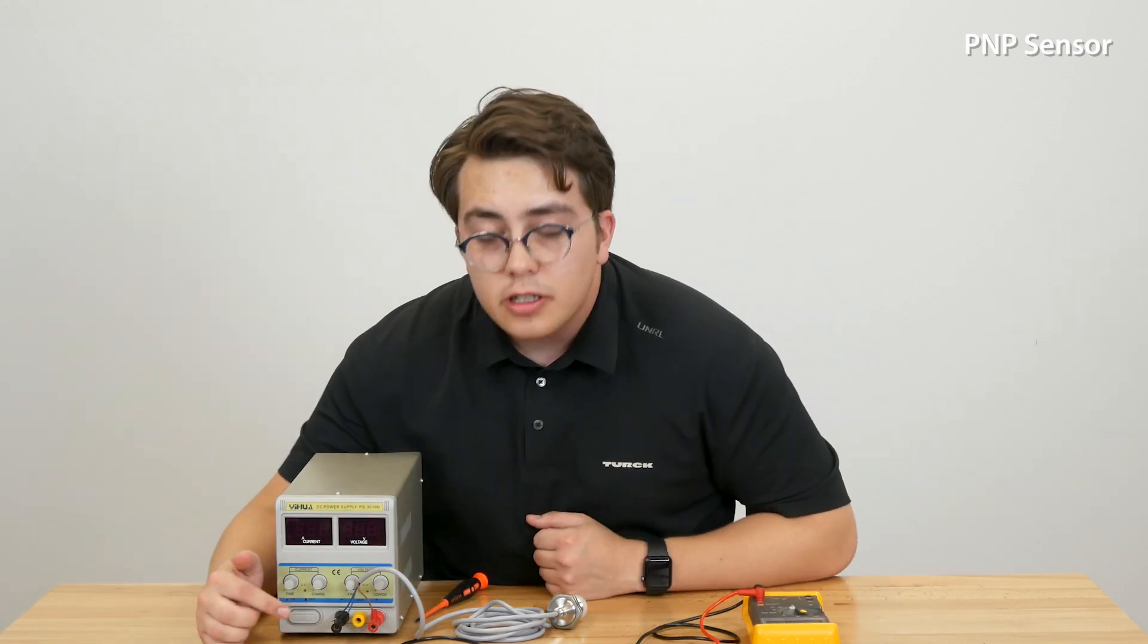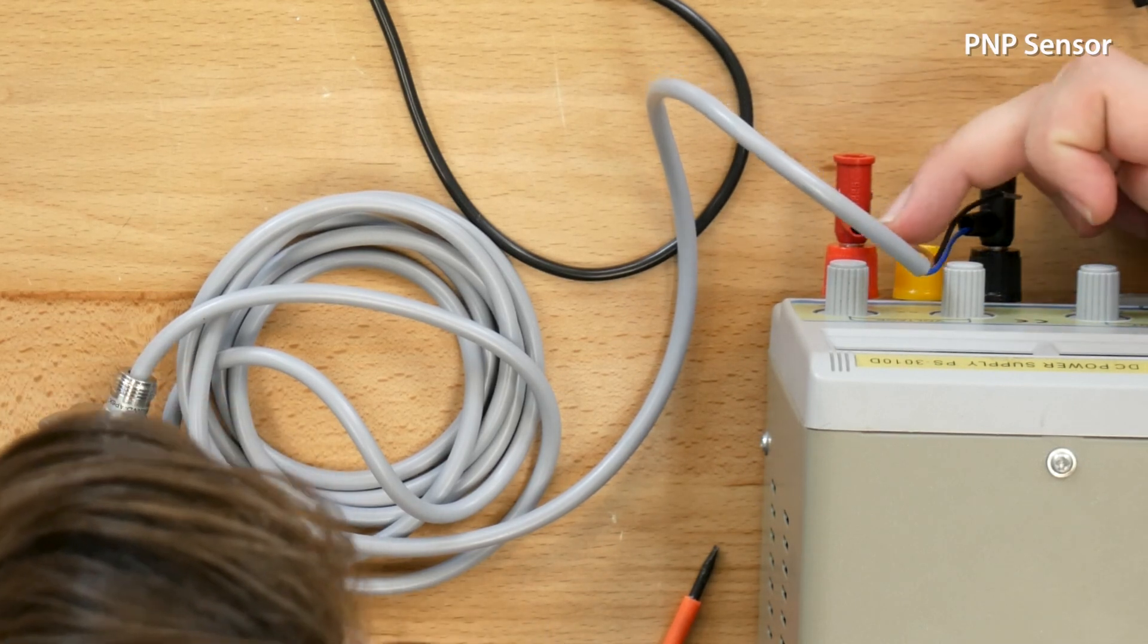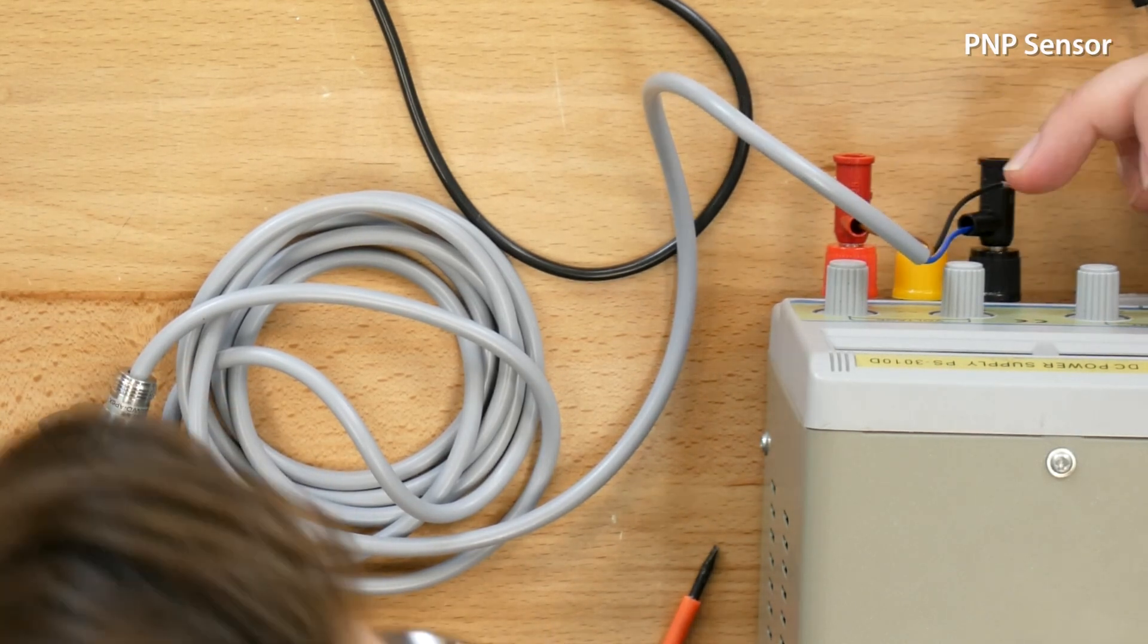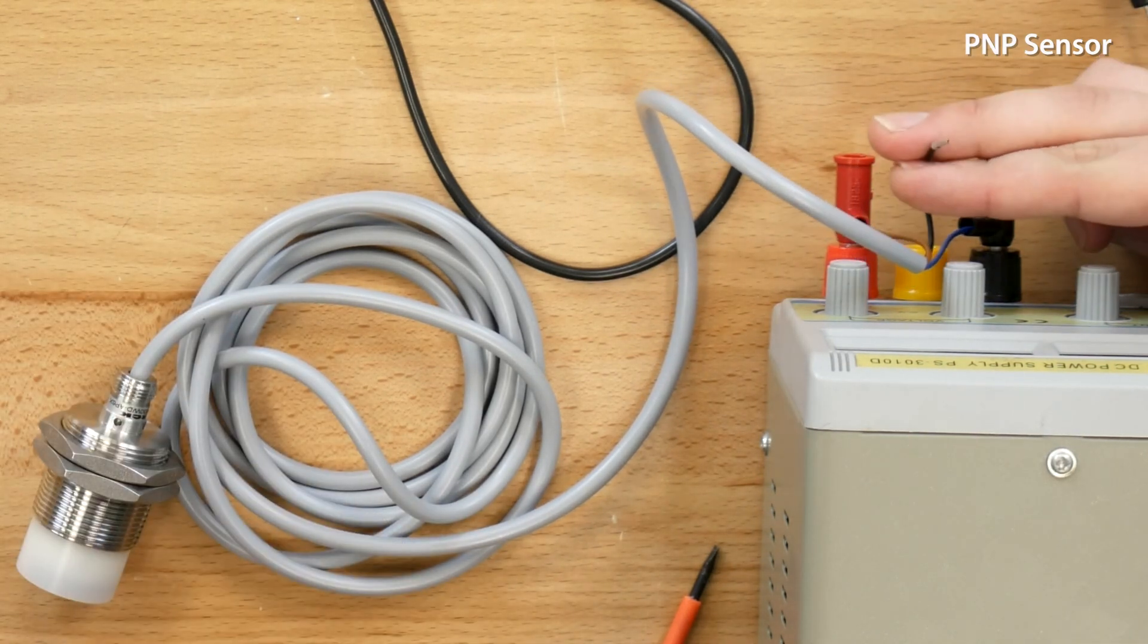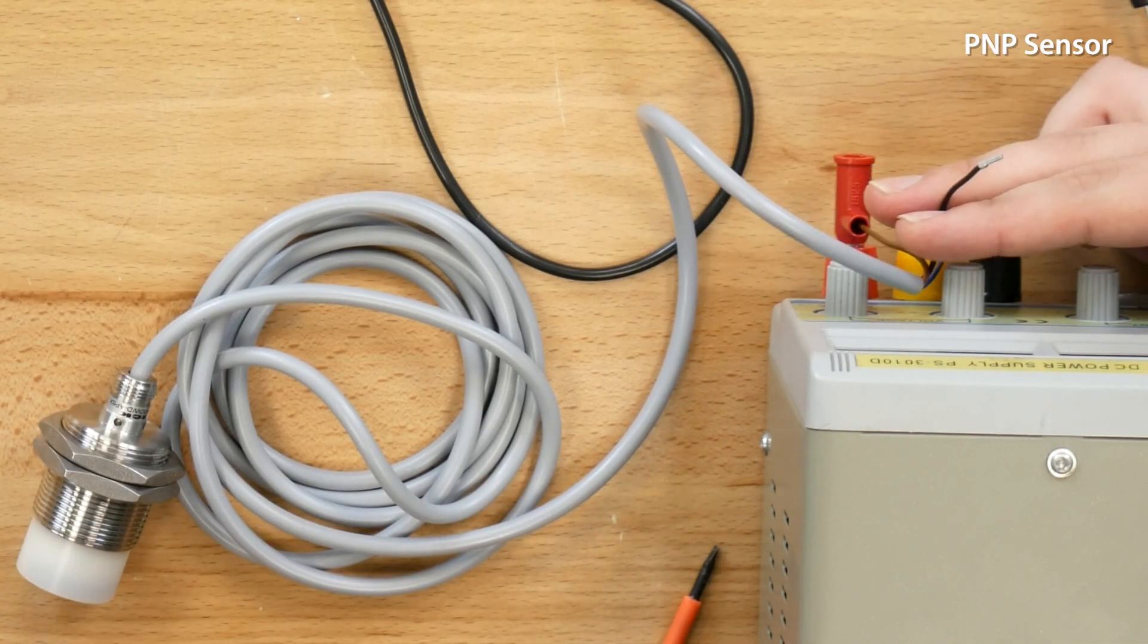The wiring is nearly the same as the NPN sensor. Now our pin one is still tied to our plus 24 volts. Pin three is still tied to your negative and then you have your third wire black conductor which is your output.